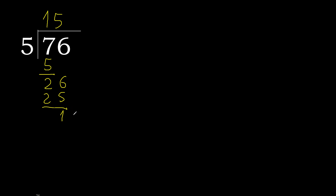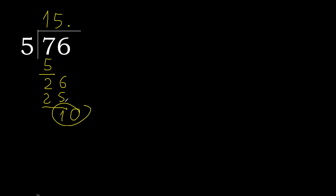There is no next number, so we are done with the whole part. We always complete with a zero — place a decimal point here, then bring down a 0 to make 10.